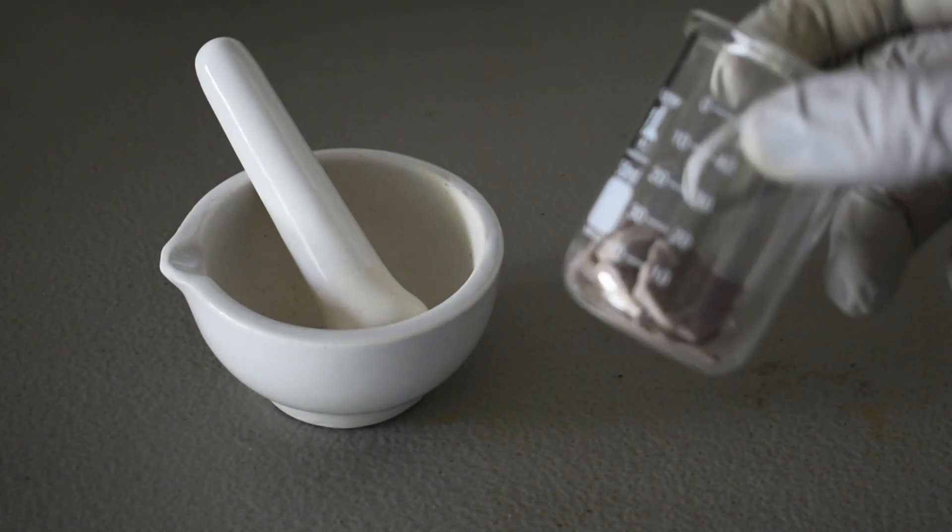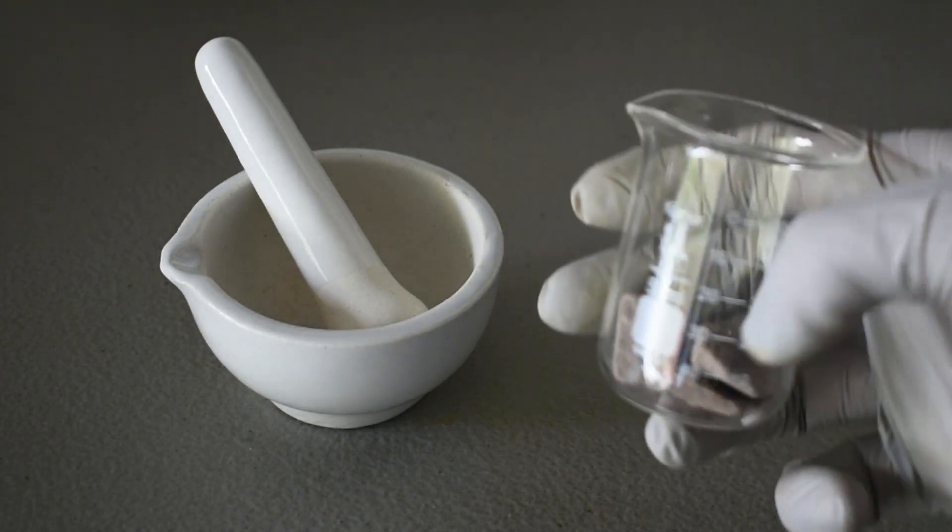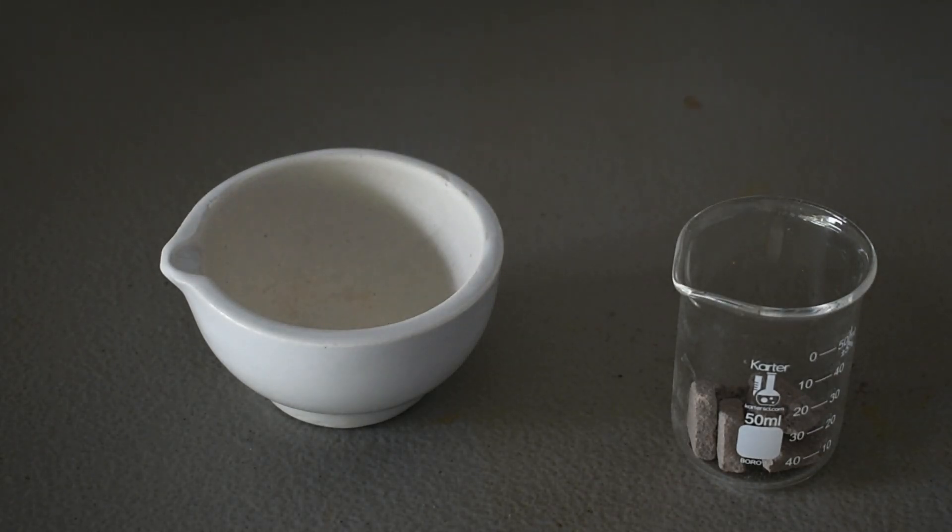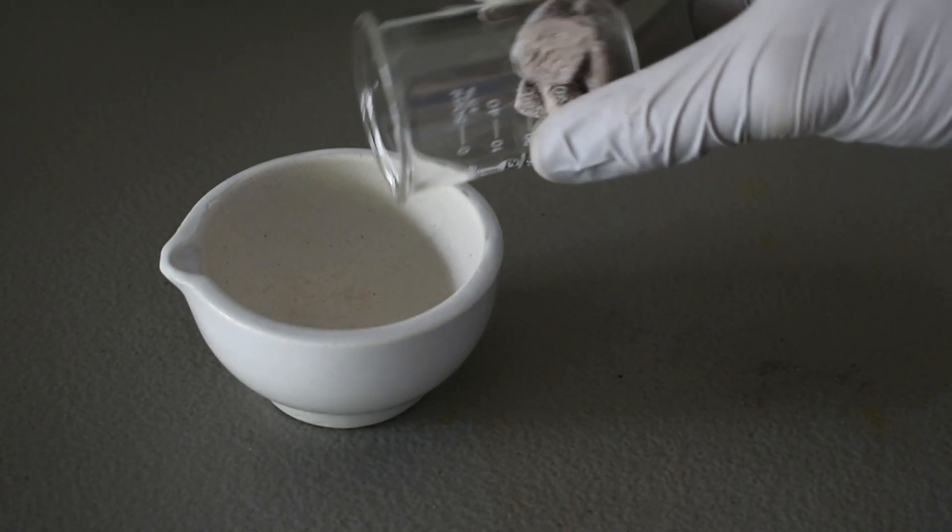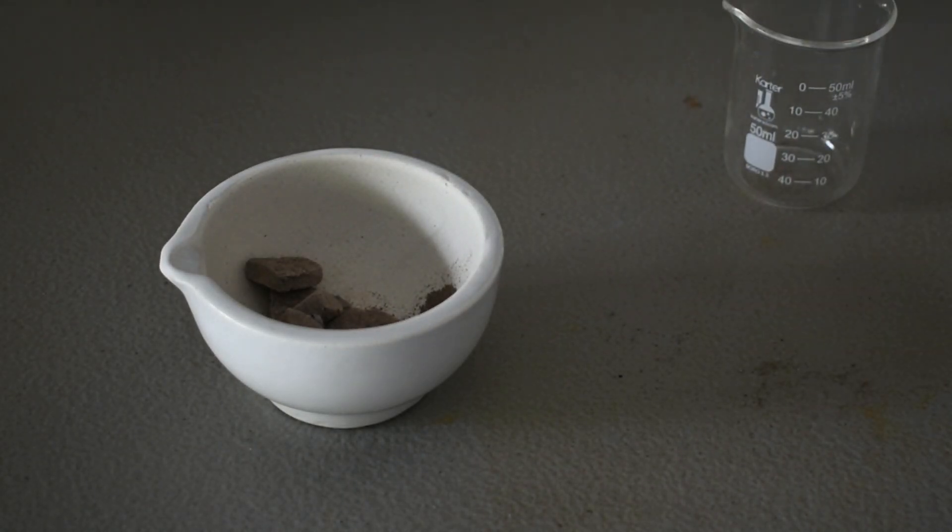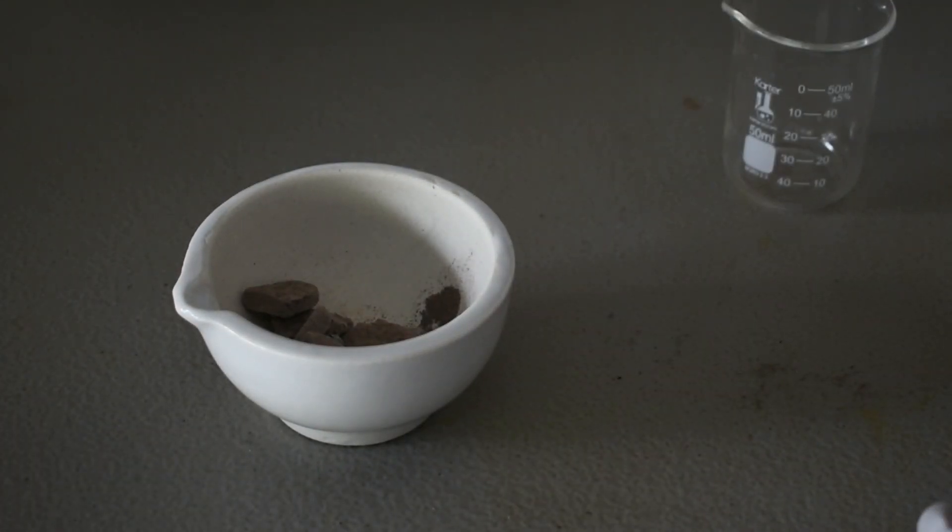Alright, I've weighed about 8.5 grams of iron 2 chloride, which hopefully hasn't oxidized too much. And I'm going to be grinding it in my mortar and pestle here. I prepared the iron 2 chloride via Nerd Rage's method where you take iron metal and you dissolve it in hydrochloric acid over a couple days.